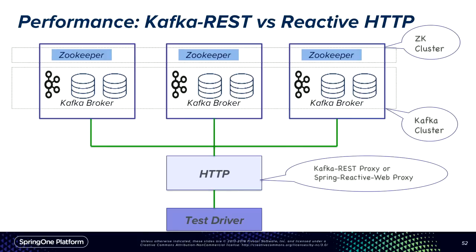The more interesting comparison is when there are multiple entities in your pipeline. Here the comparison is driving messages to Kafka via HTTP: Confluent Kafka REST proxy (HTTP to Kafka using a JAX-RS stack) versus Spring Reactive Web (a reactive HTTP proxy with a reactive Kafka client). Both are run on Jetty with an unlimited thread pool for a fair comparison. Spring Reactive would likely perform better on Netty, but Jetty was chosen to keep the comparison equal.